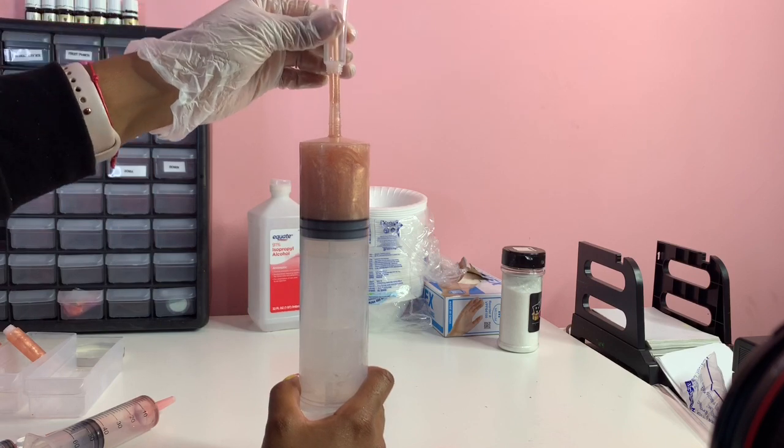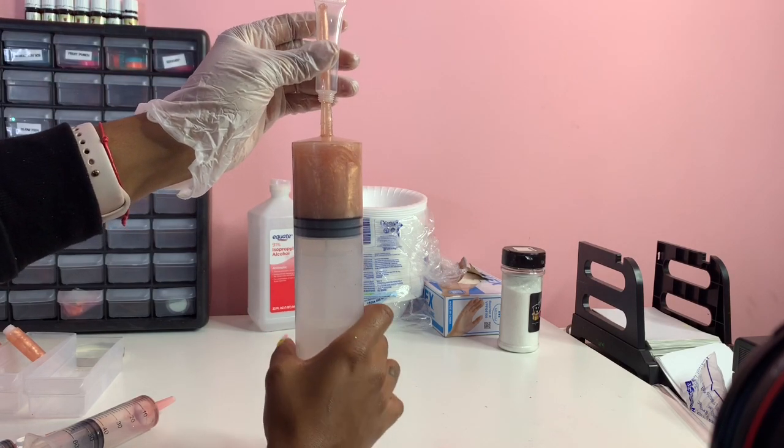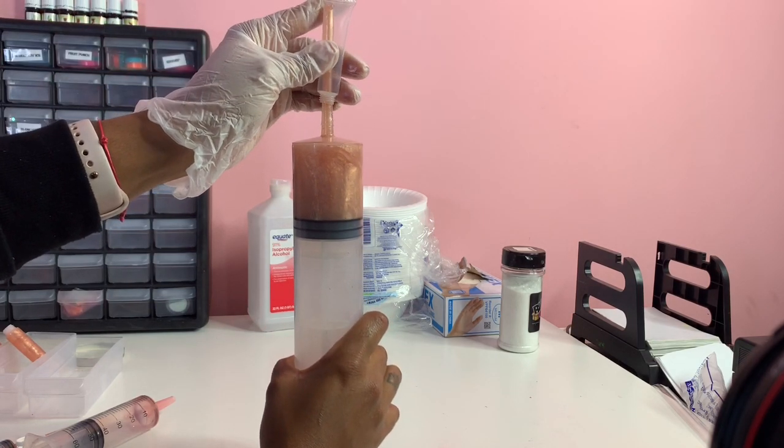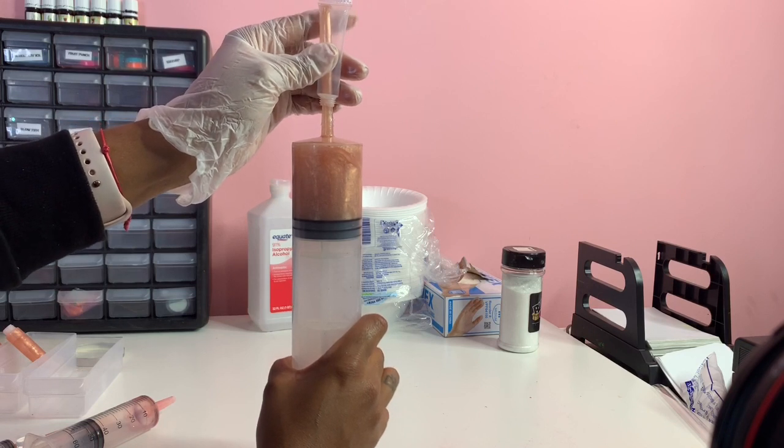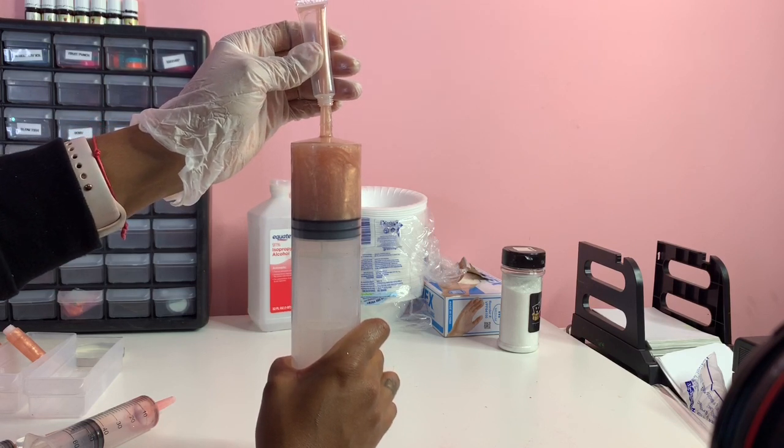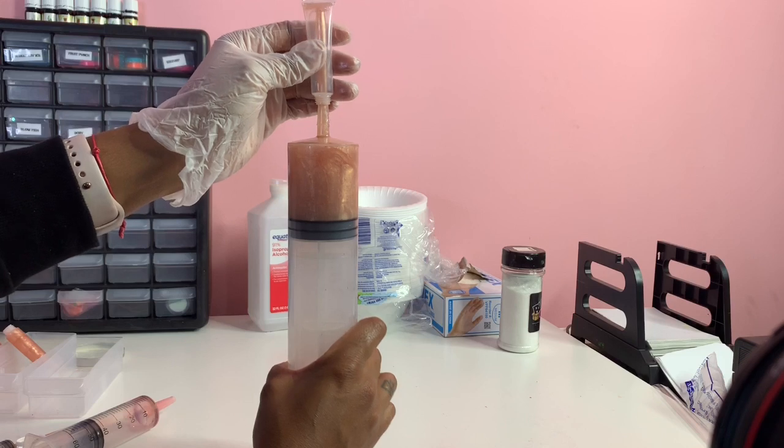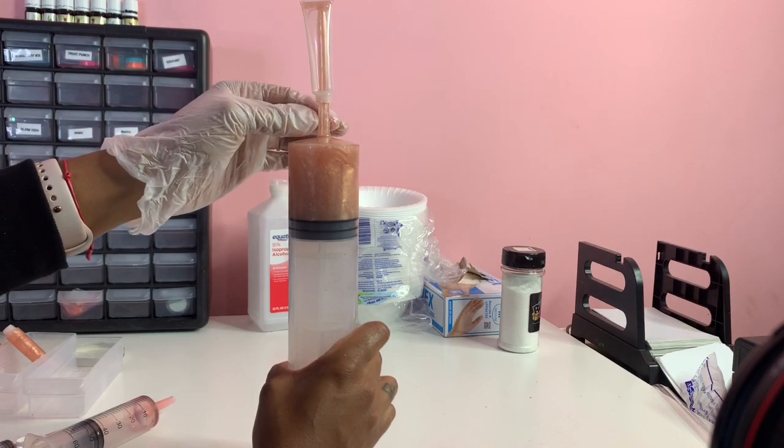I'm of course going to demonstrate that for you guys right now. So that's how I slide it on there and then I pull down on the syringe, and then the gloss will come pouring out. And basically that's how I do it.